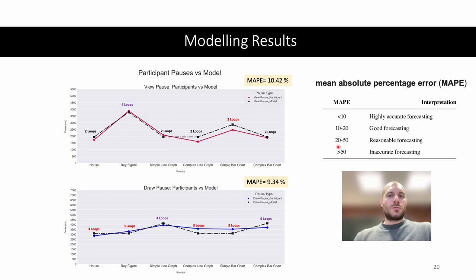The introductory loops are able to explain and predict the different duration of the view pause and the draw pause, with the view pause having fewer loops over the stimuli than the draw pause, except for the ray figure, where the number of loops for the view pause was bigger than for the draw pause.